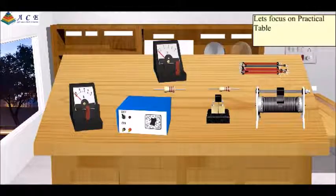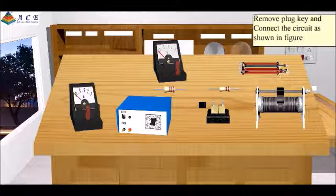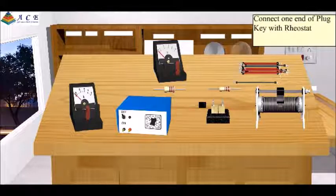Let's focus on the practical table. Remove the plug key and connect the circuit as shown in the figure. Connect one end of the plug key with the rheostat.